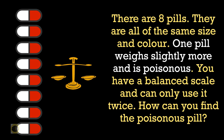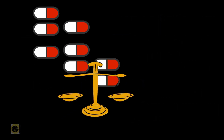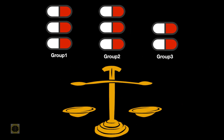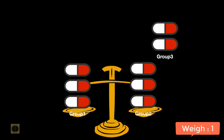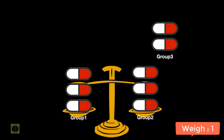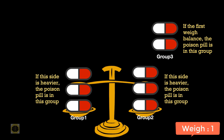Split the pills into three groups: group 1 contains pills 1, 2, 3; group 2 contains pills 4, 5, 6; and group 3 contains pills 7 and 8. For the first weighing, put 3 pills on one side and 3 on the other, leaving 2 set aside. If one side is heavier, the poisonous pill is in that group. If they are the same, it's in the 2 set aside.